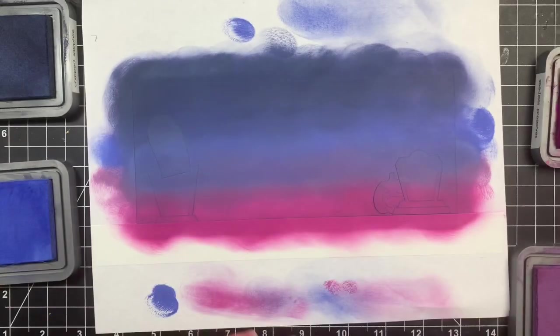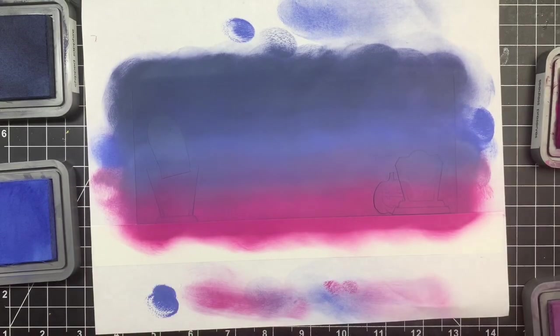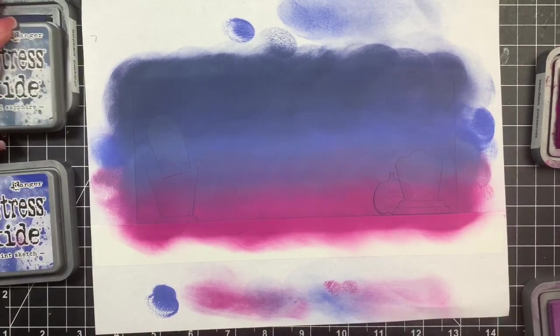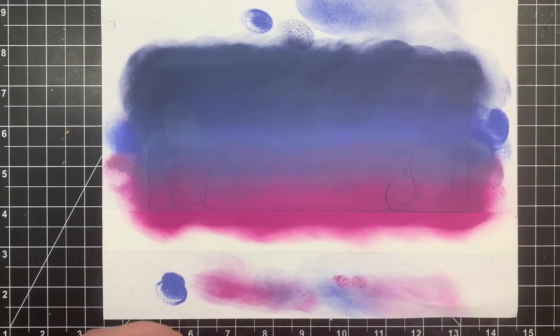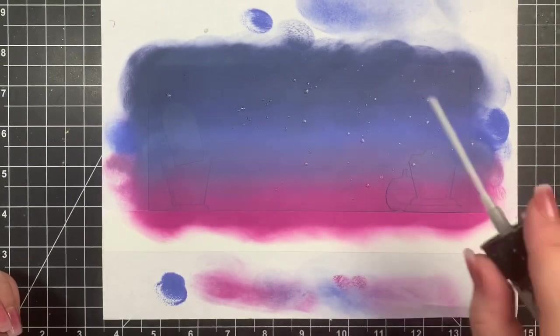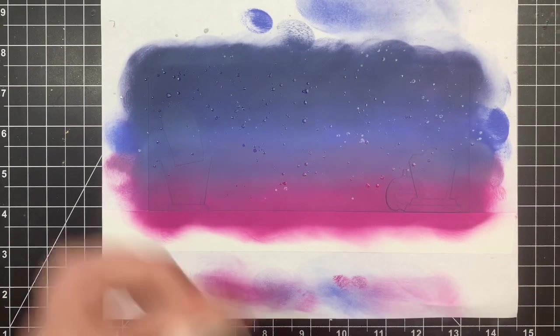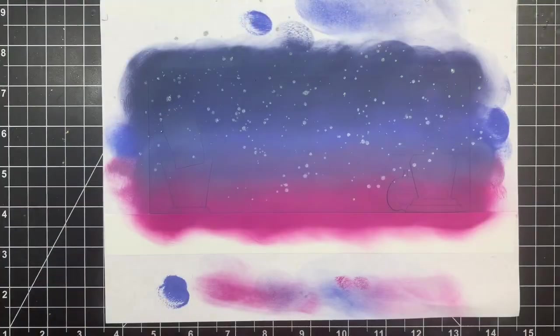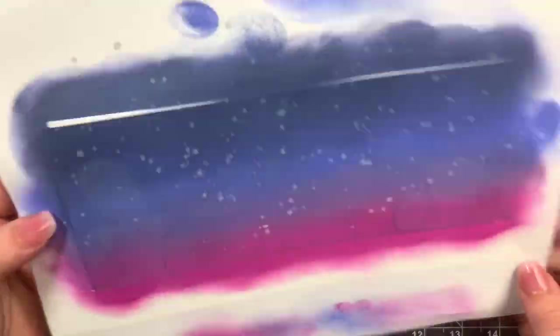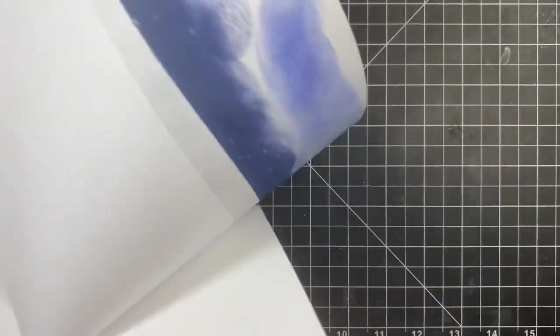So I'm going to take some shimmer spray and you want to make sure that you shake this up really really good to get all that shimmer in the mixture itself. And then I just take off the cap and kind of spritz some of that on the background, dab that up with a paper towel, and I let this panel sit for maybe about 20 minutes or so before removing my masks because I have a whole lot of moisture on here including the ink and the shimmer spray.